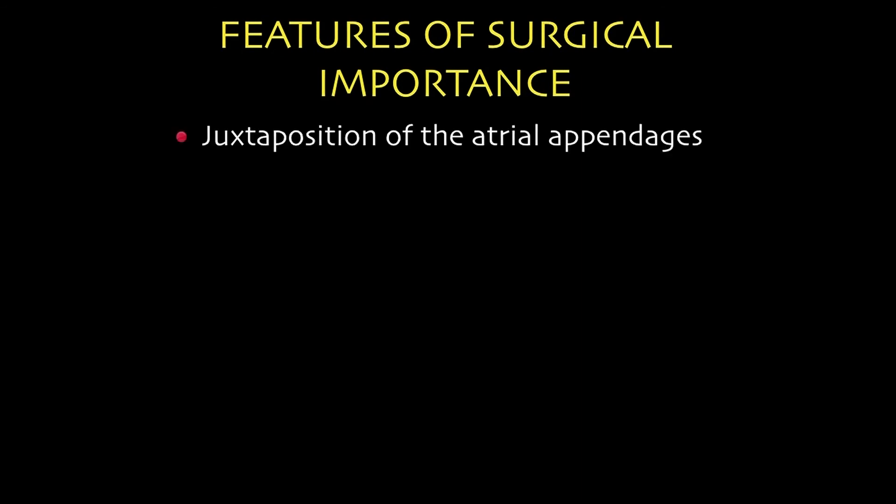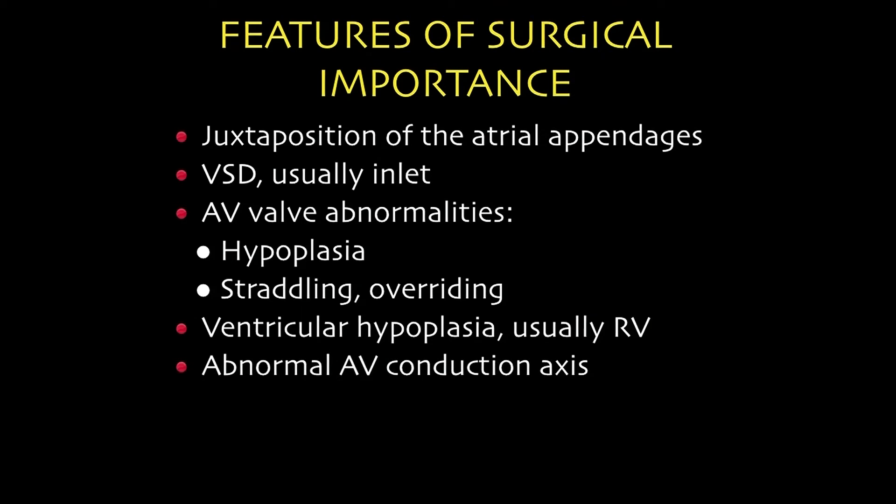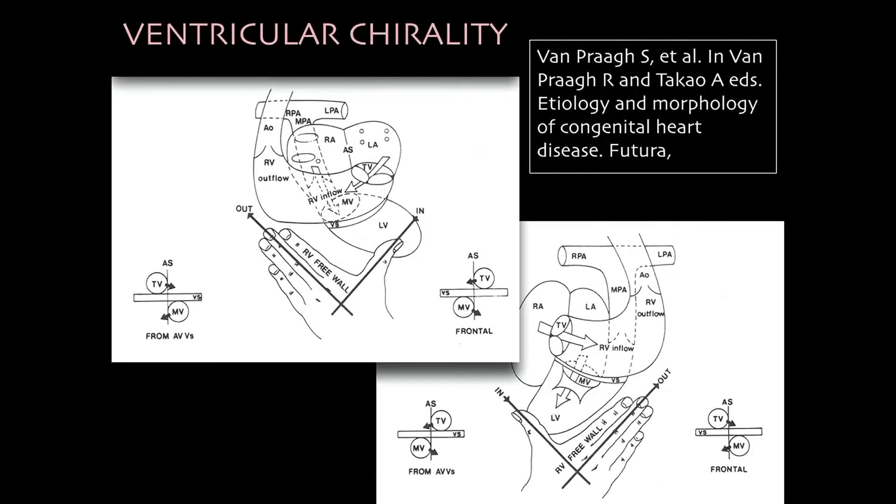Features of surgical importance include juxtaposition is not uncommon. And VSD is usually inlet. AV valve abnormalities including hypoplasia and straddling overriding, very common. And ventricle hypoplasia usually the right ventricle. And abnormal atrioventricular conduction axis. And abnormal VA connection in most cases.